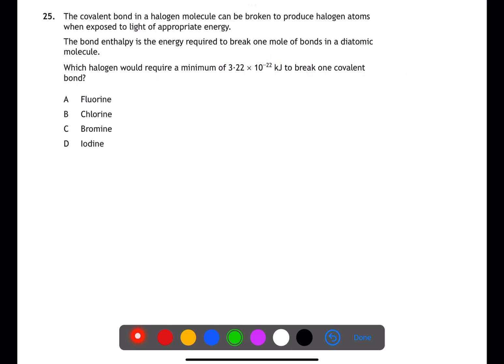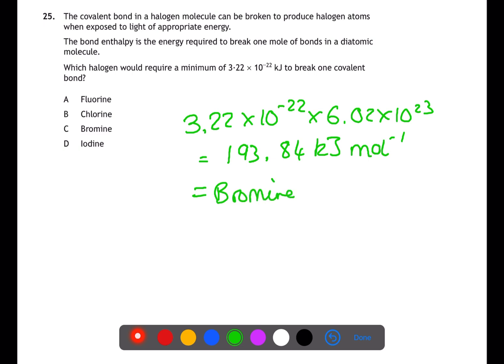In question 25, you're trying to calculate the energy required to break one mole of bonds. You've been given the energy required to break one bond, so you need to multiply this by Avogadro's constant, which you can find in your data book. If you multiply the value given by Avogadro's constant, then you will get 193.84 kilojoules per mole. If you then compare this to the bond enthalpy table in the data book, you will find that this is approximately equal to bromine, which is 194.